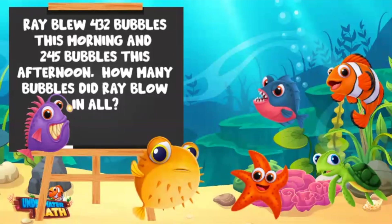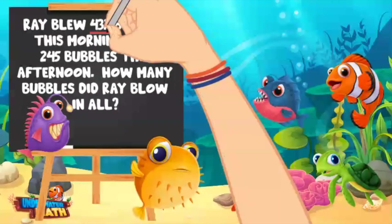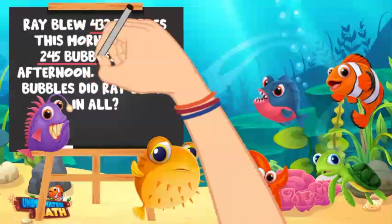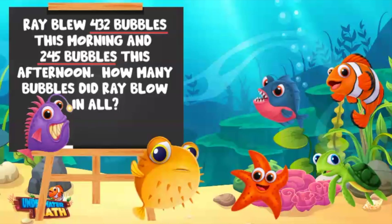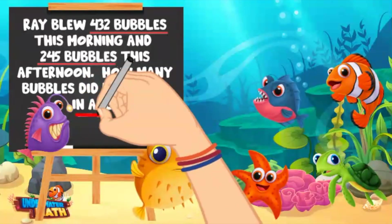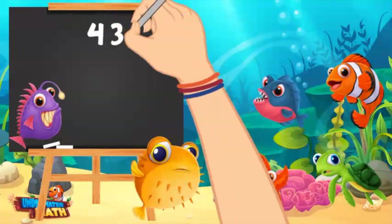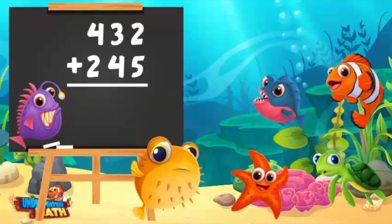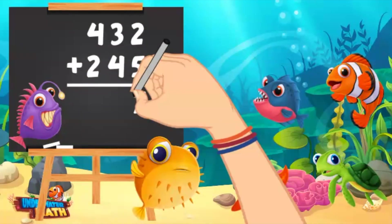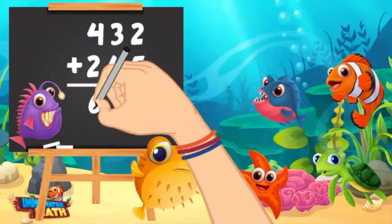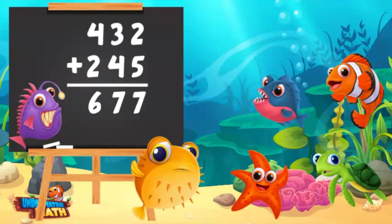What pieces of this problem seem important? 'I think the numbers are important — 432 bubbles and 245 bubbles.' Absolutely! The numbers are critical to solving this problem — I'll underline them to signify their importance. 'I think the words "in all" are important — that tells me I need to add.' Nicely done, Oliver! The words "in all" tell us we need to add. Let's add 432 and 245. Stacking them: 2 plus 5 equals 7, 3 plus 4 equals 7, and 4 plus 2 equals 6. Ray blew 677 bubbles in all.